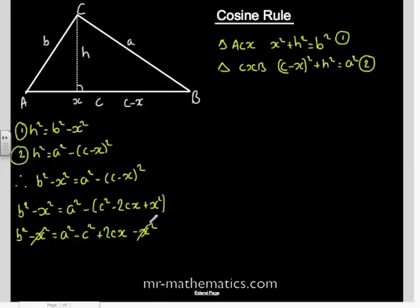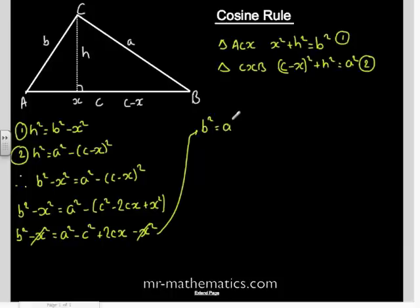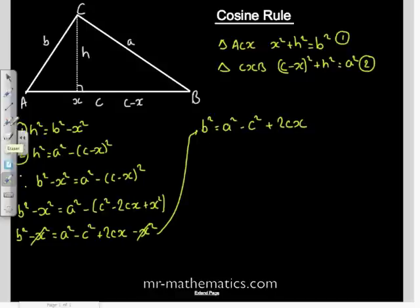We cancel out the negative X squared by adding X squared to both sides, giving B squared equals A squared minus C squared plus 2CX. Now the point X is arbitrary — it is something that we introduced.